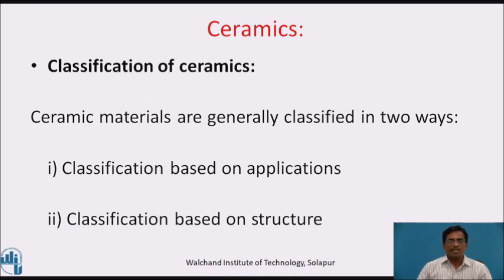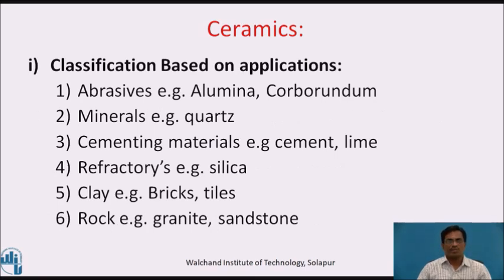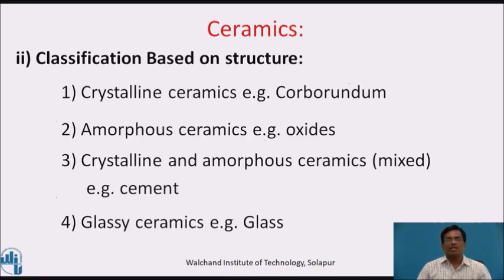Classification of ceramics is based on application as well as structure. Classification based on applications: first, abrasives — example, alumina, carborundum; second, minerals — cores; third, cementing materials — example, cement and lime; fourth, refractories — example, silica; fifth, clay materials — like bricks, tiles, etc.; sixth, rocks — example, granite, sandstones, etc. Classification based on structure: crystalline ceramics — example, carborundum; amorphous ceramics — example, oxides; crystalline and amorphous ceramics — that is cement; and glassy ceramics.